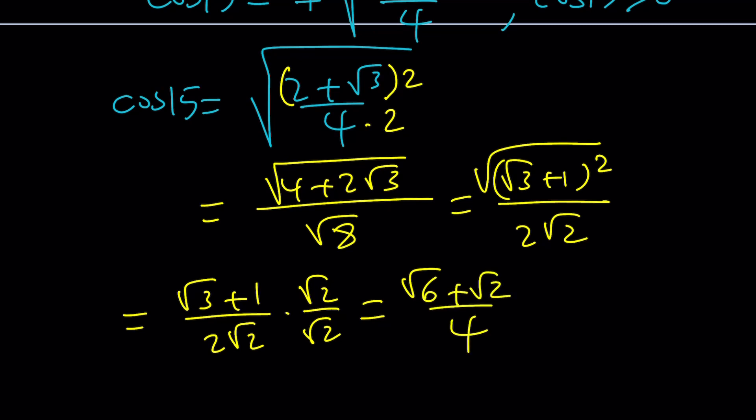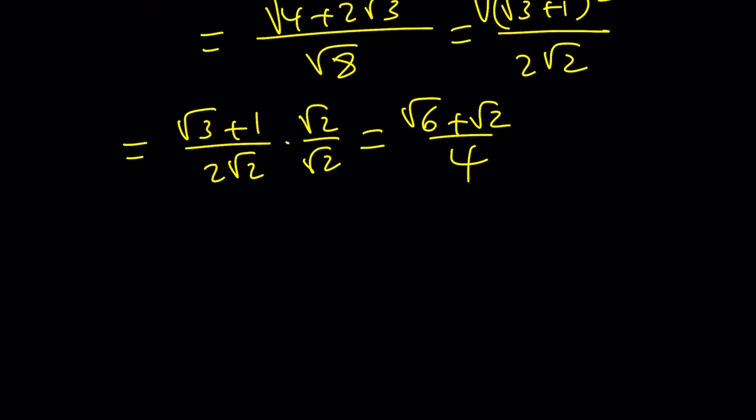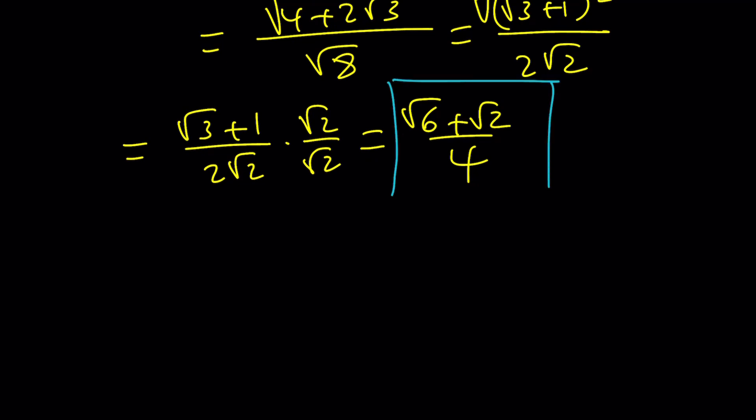Maybe you already memorized this. A lot of people memorize cosine 15, sine 15, tangent 15. Tangent 15 is very nice, by the way. But that's the value in simplest form. Great. Let's go ahead and talk about the second method.